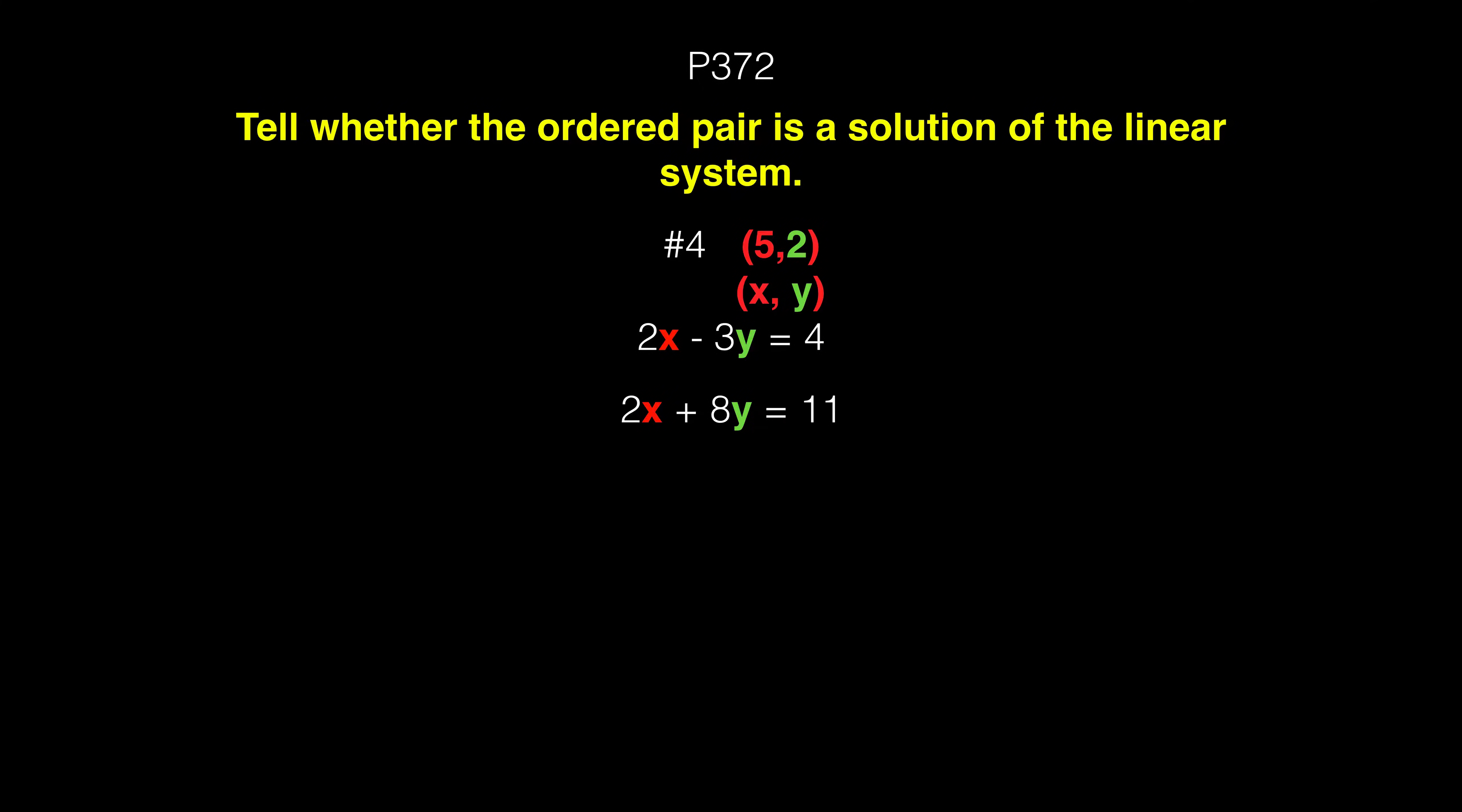Since 5 and 2 are coordinate points, where 5 is the x and 2 is the y, all I have to do is input those coordinate points into my equations and see if they still hold true. For example, my x is 5, so I replace the x variable with 5, and my y's are all 2. Then I just do the algebra and see if the equations hold true.